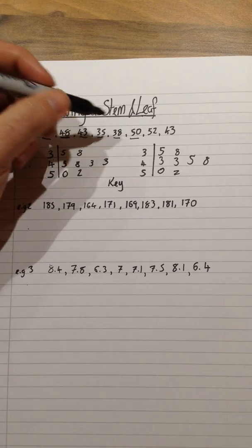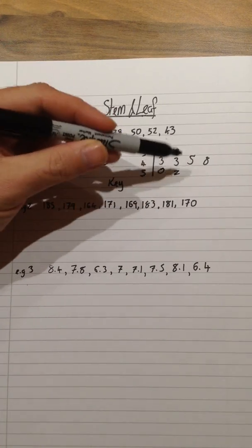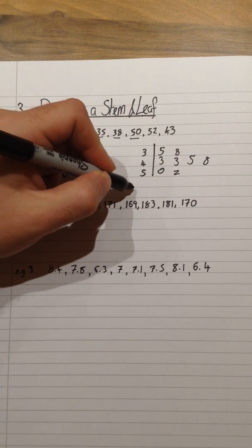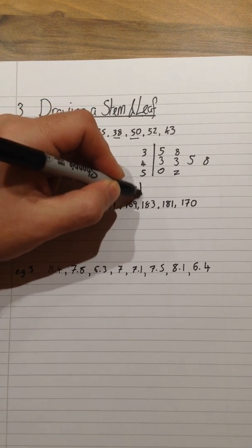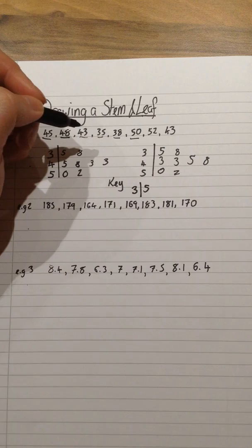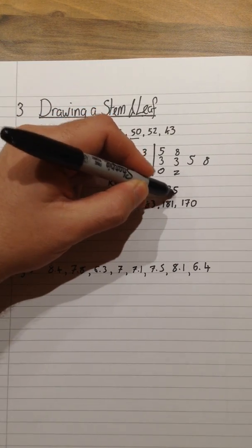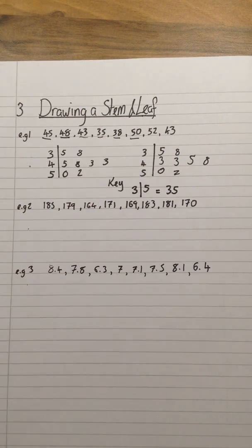We only need to pick one number and just demonstrate what that means. So on the diagram, if I were to write 3 with the line, then 5, that represents or equals the number 35. So here is my key.